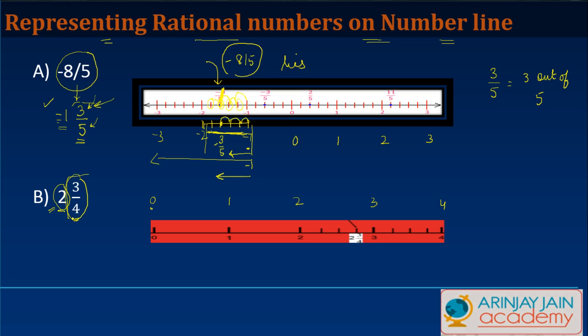Now between these numbers, if I see the denominator 4 on the numerator 3, this implies 3 out of 4. So this number should lie between 2 and 3. Between 2 and 3, it means 3 out of 4. So what I do is, I divide this area between 2 and 3 into 4 equal parts,